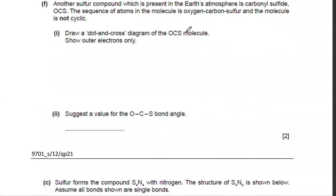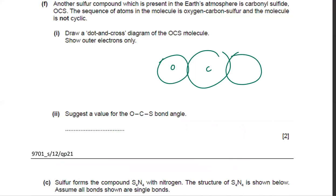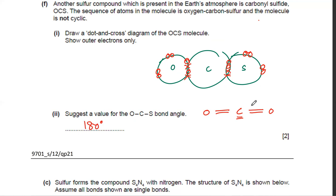Draw the dot-and-cross diagram for OCS. Carbon bonds to O and S; carbon has four electrons, sharing two with O (double bond) and two with S (double bond). Sulfur and oxygen are both in group six, leaving lone pairs on each. Carbon has no lone pairs, so suggest the bond angle: carbon in the middle makes two double bonds with no lone pairs, so bonds are as far apart as possible — linear, 180 degrees.